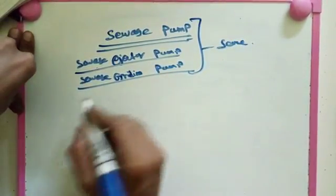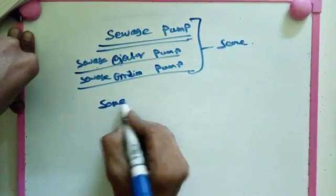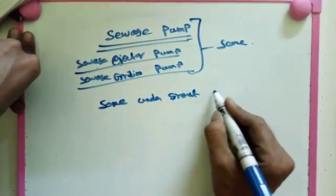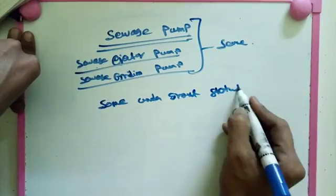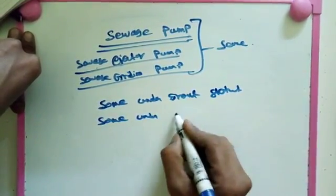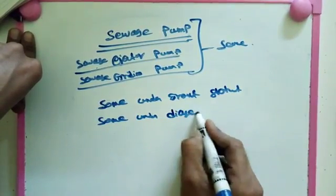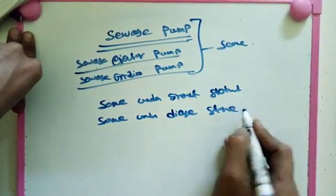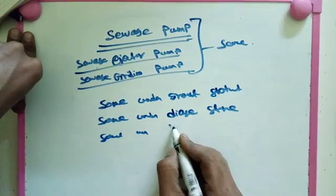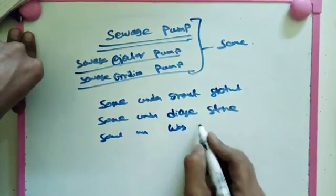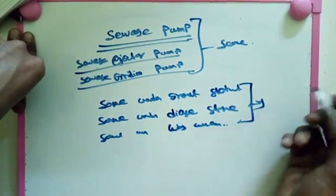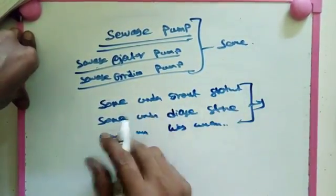Some underground storage water, some underground drainage storage, some underground washing water or drainage. These are the water we didn't do anything for flowing out and pulled out. So in these cases we use sewage pump.